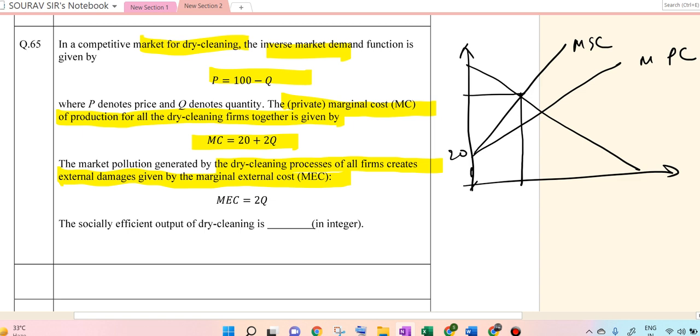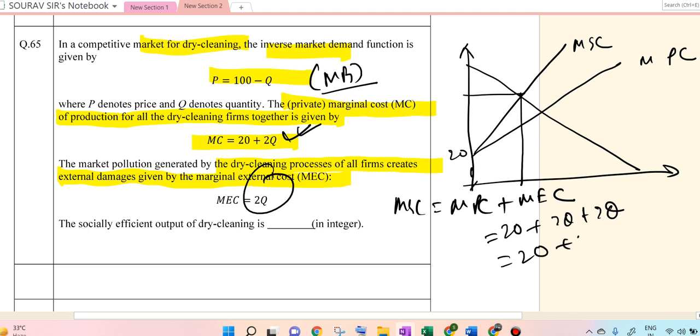So P equals 100 minus Q, this is the marginal benefit. MC equals MPC, so 20 plus 2Q. MEC equals 2Q. So MSC equals MPC plus MEC, which is 20 plus 2Q plus 2Q, so 20 plus 4Q. Setting MB equal to MSC: 100 minus Q equals 20 plus 4Q. So 5Q equals 80, Q equals 16. 16 is the answer.